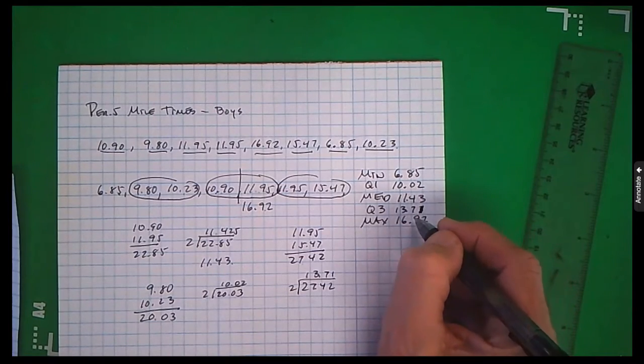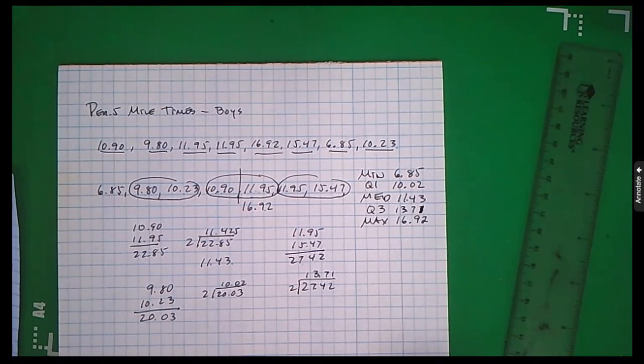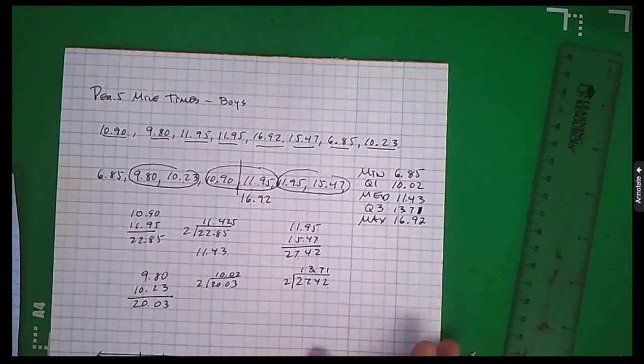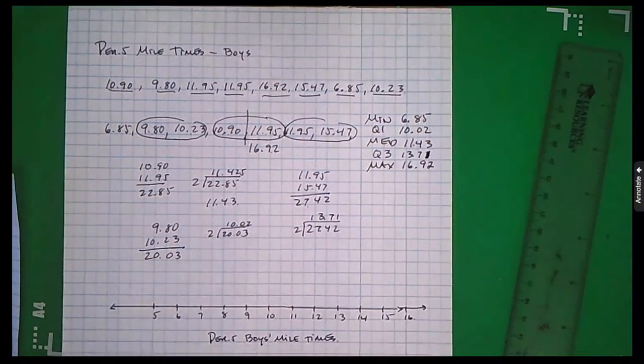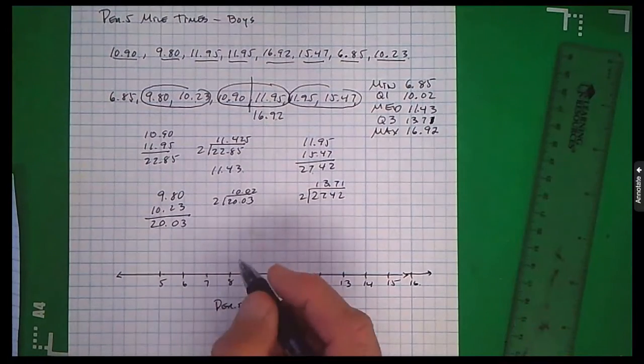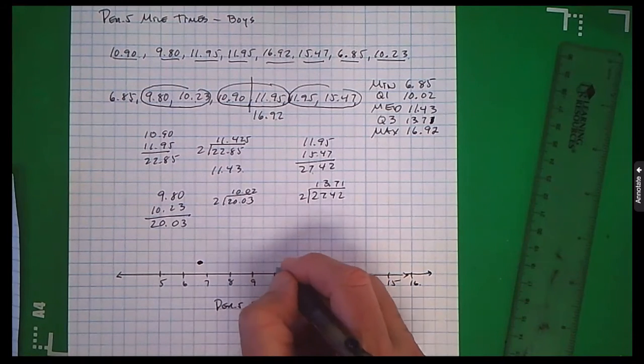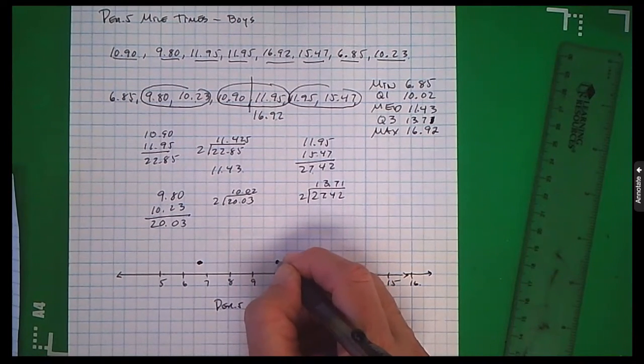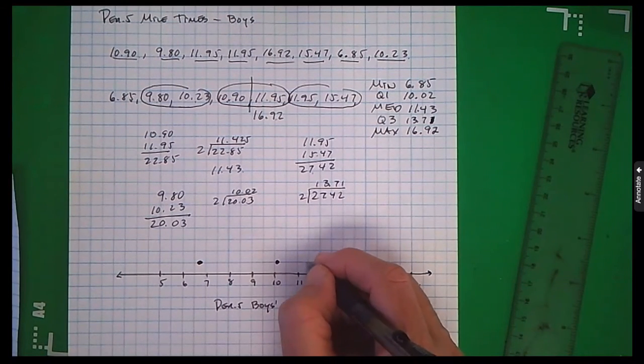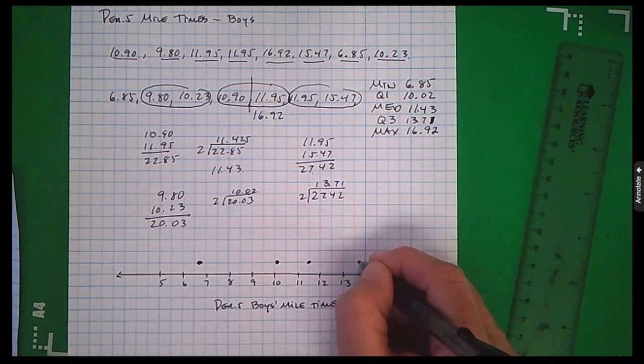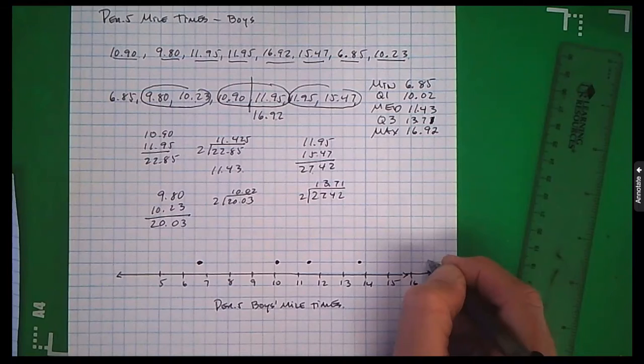So now I have my five number summary, and I'm ready to do my graphing. I'll put a dot at each of the numbers in the five point summary. Here's the minimum. Here's q1. Here's the median. Here's q3.